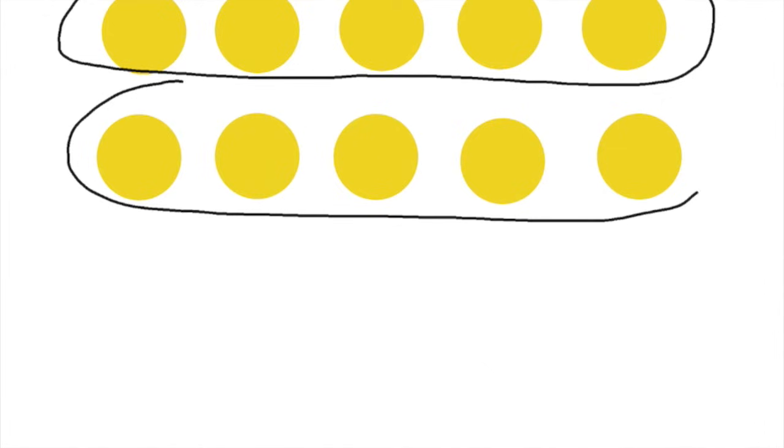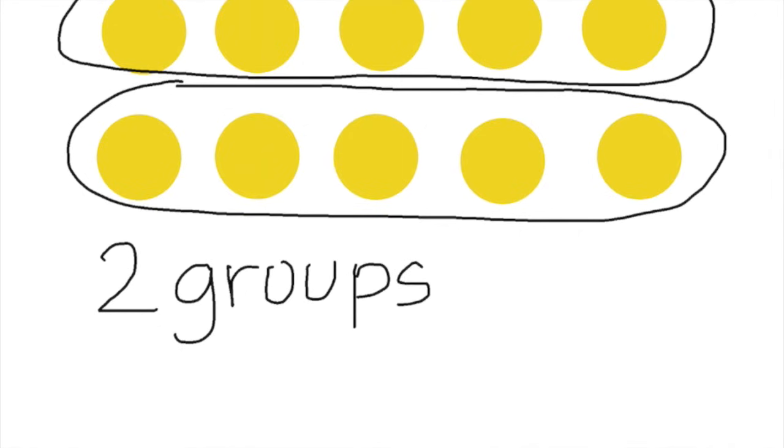All right, so now that we've had some time, I want you to look at here again is our row. Here again is a row. And so we have two rows, or two groups, of five. Two groups of five. There's five here and five here. Now let's think about it in a different way.